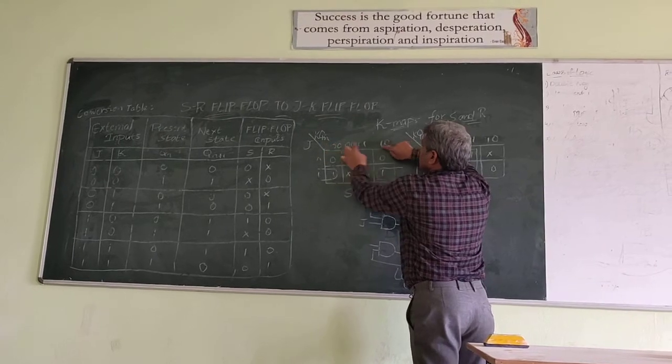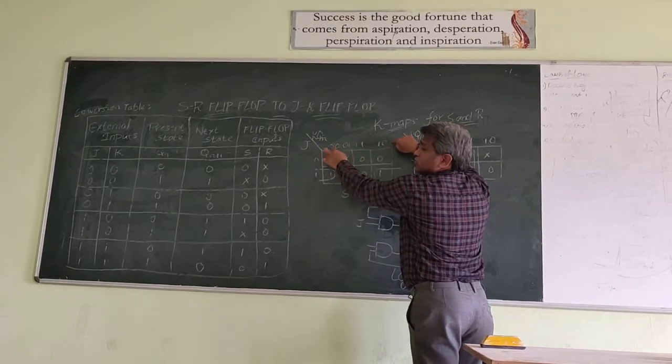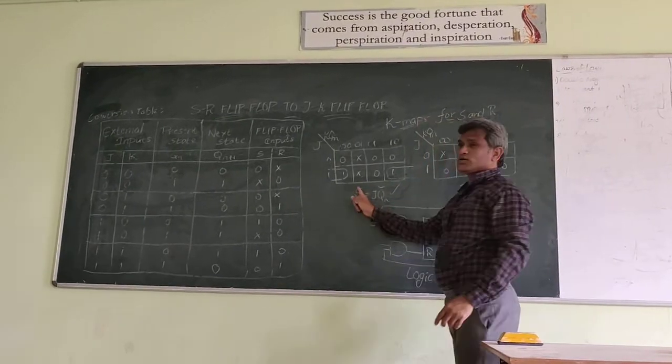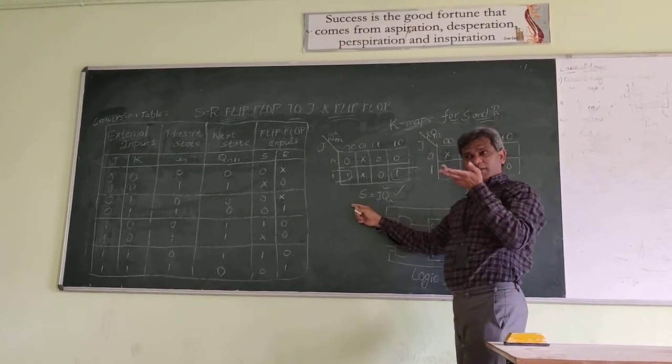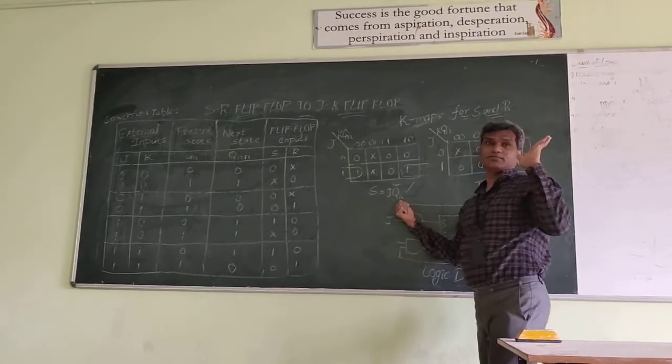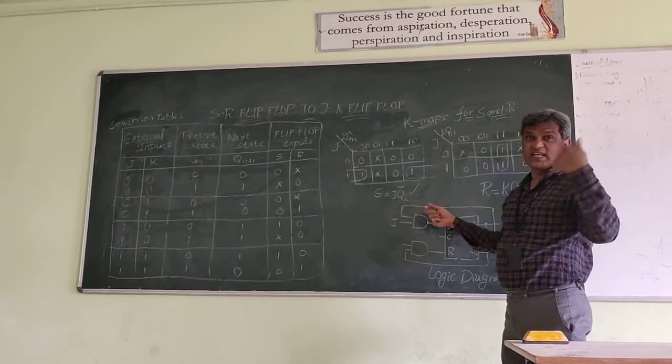Next change is 0, 0, 0. That means, Qn bar is unchanged. Qn bar. From this S equals, we write here Qn bar. That means, S is supposed to be J into Qn bar. That is how the S has been derived.